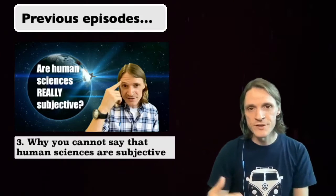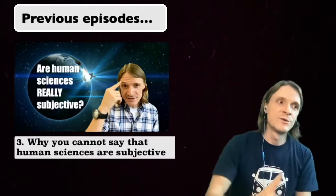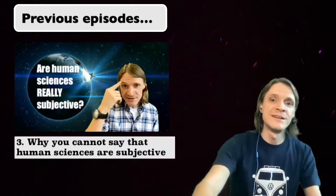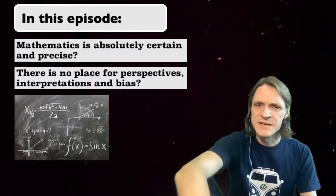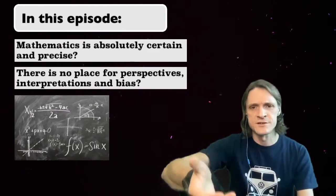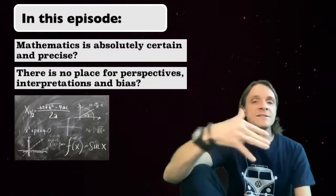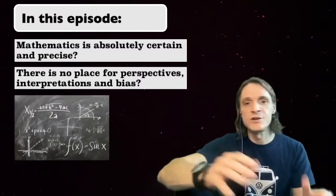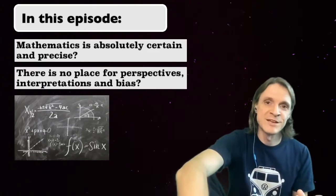So in this fourth episode, I thought it would be a good idea to switch over to another area of knowledge and debunk another common superficial belief. So this episode is about mathematics. It is a common argument in TOK discussions that mathematics, unlike other areas of knowledge, is absolutely certain and precise, and that bias has no place in mathematics except perhaps when a mathematician makes a mistake.